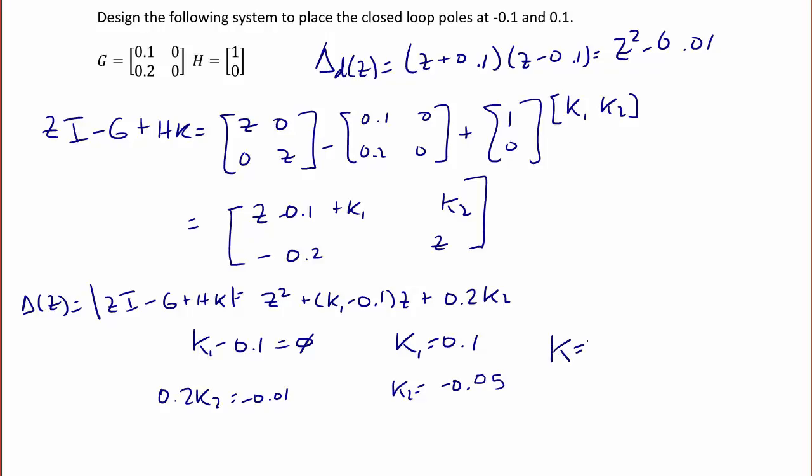So the gain matrix K is equal to 0.1, negative 0.05.